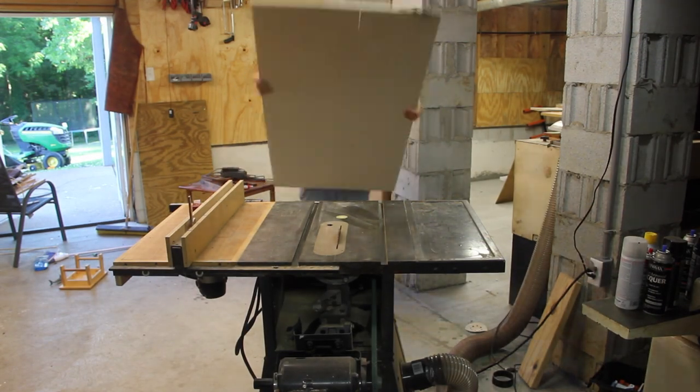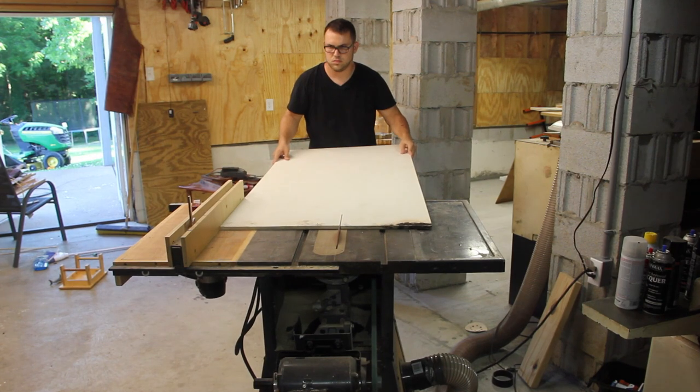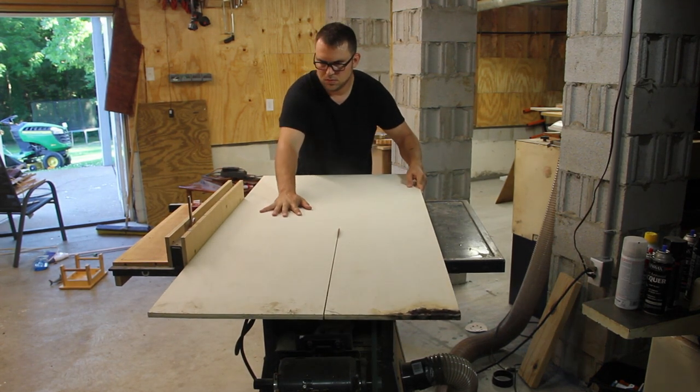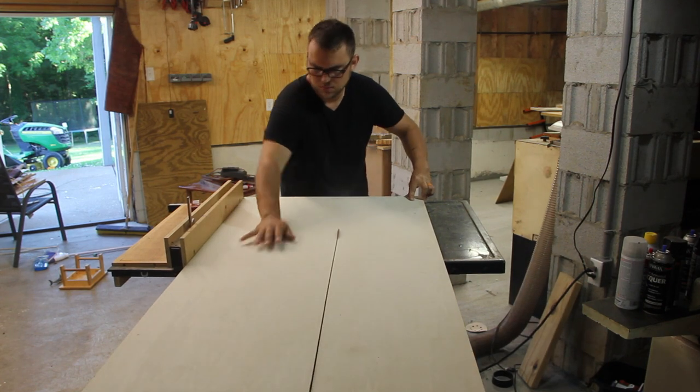Now it's time to decide how far apart you want the bulbs. The standard 2 bulb shop light is about 5 inches wide, but I wanted mine to be farther apart, so I went with a 16 inch wide base.